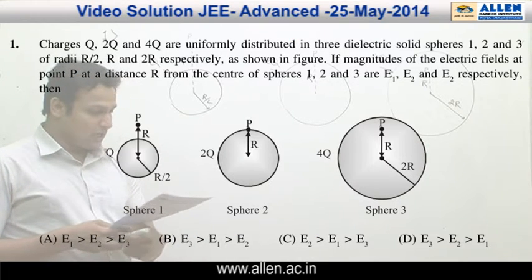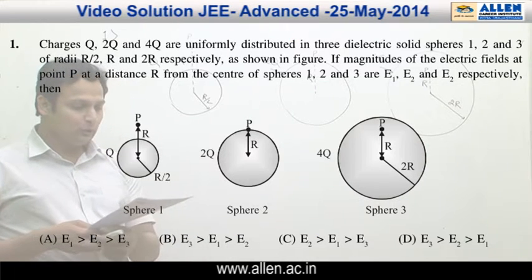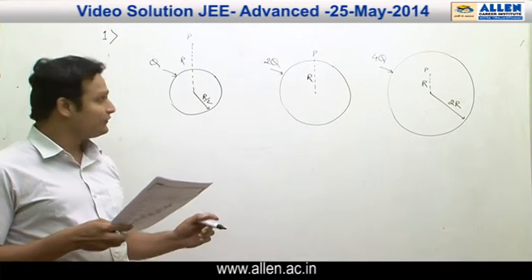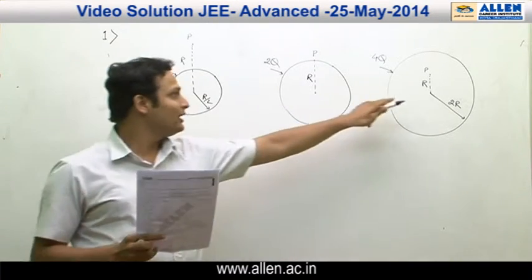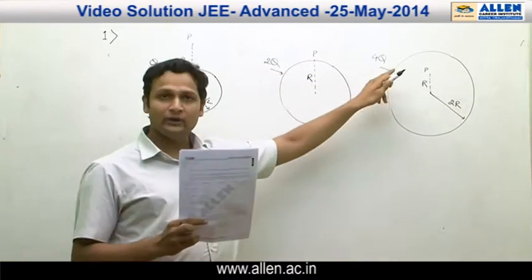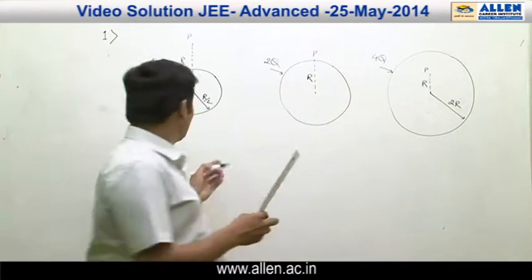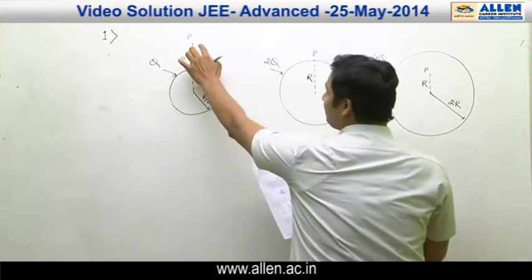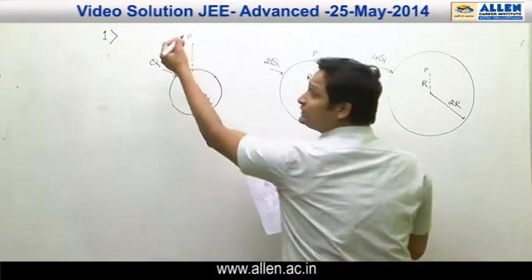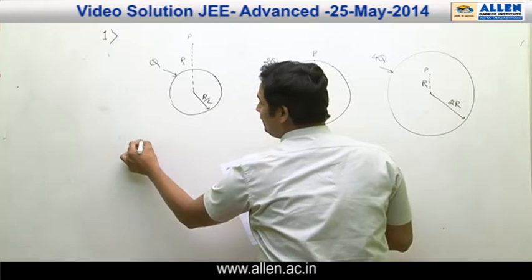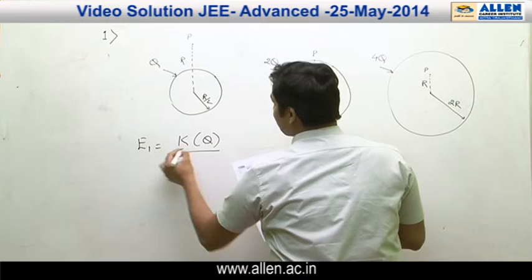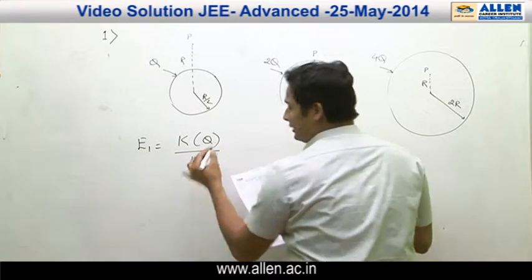Question number one: charges Q, 2Q, and 4Q are uniformly distributed in three dielectric solid spheres. We have to find the electric field at point P. In the first case, point P is outside the sphere, so electric field E1 will be K·Q divided by R squared.